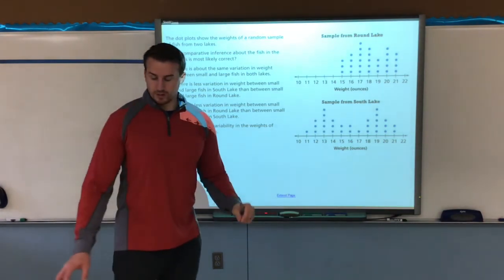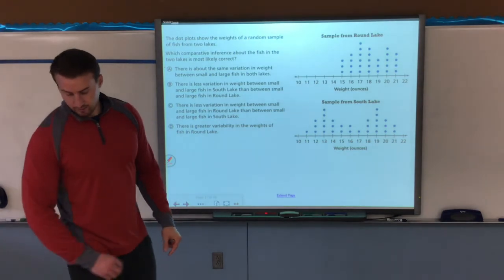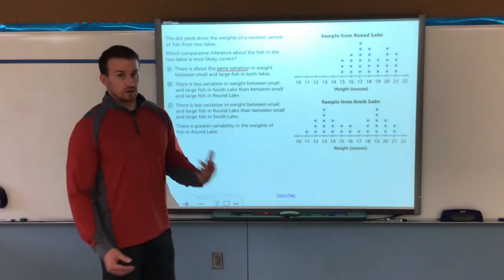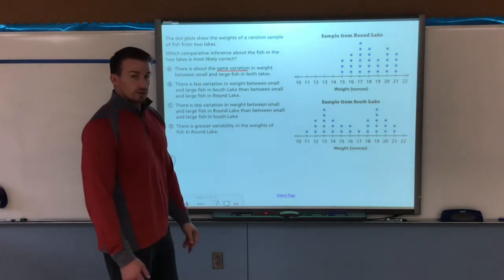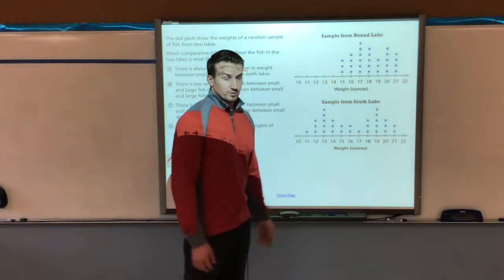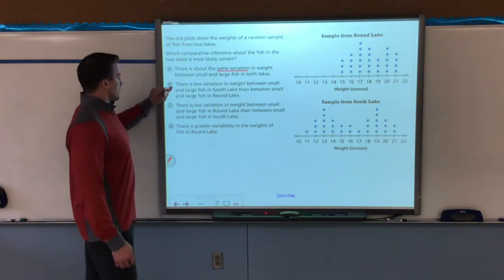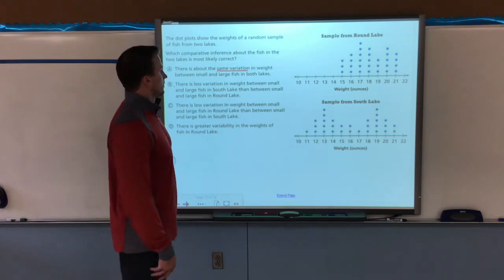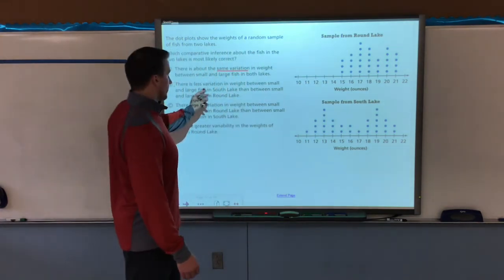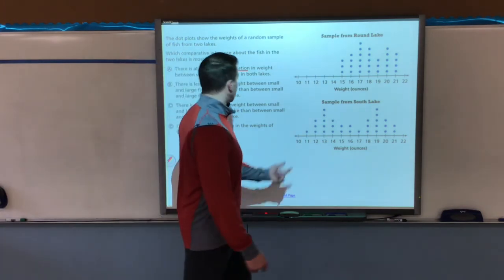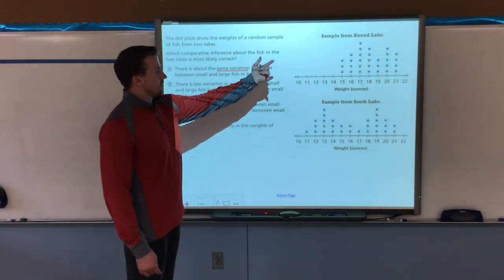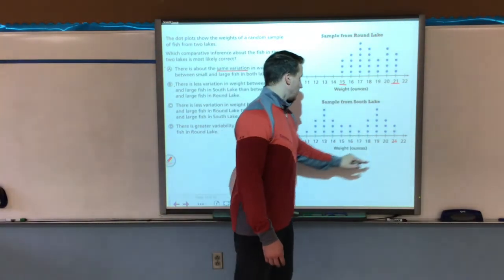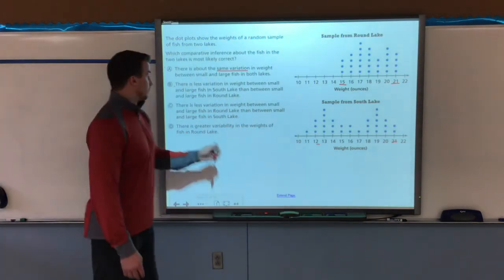So statement A says there is about the same variation in weight between small and large fish in both lakes. The same variation. Well, what does that mean? That means that the weight varies the same between large and small. Does that actually hold true for these two examples? Probably not. Let's look at statement B. There is less variation in weight between small and large fish in south lake. So south lake's down here. They're saying the variation between large and small is less than the one between round lake. Well, large and small is 21 and 15. Large and small is 21 to 12. So that statement's not true. Can't be B. This one again can't be A because 21 and 15, 21 and 12. Not the same. They're different variations.